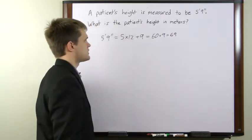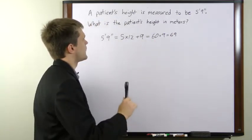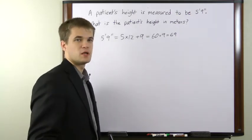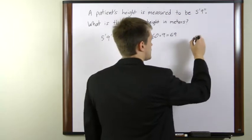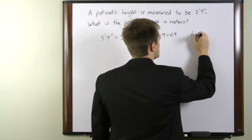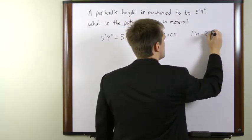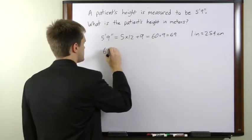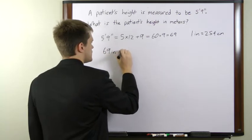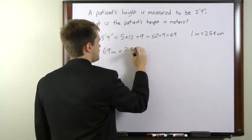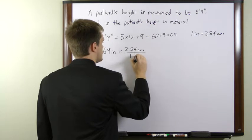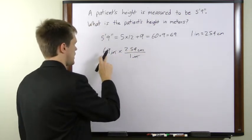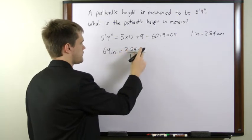So the patient is 69 inches in height. Now we then need to convert the inches into centimeters and so to do that we need our unit conversion. One inch is equal to 2.54 centimeters. So we'll multiply our 69 inches times 2.54 centimeters per one inch. The inches will cancel and we multiply 69 times 2.54 centimeters.